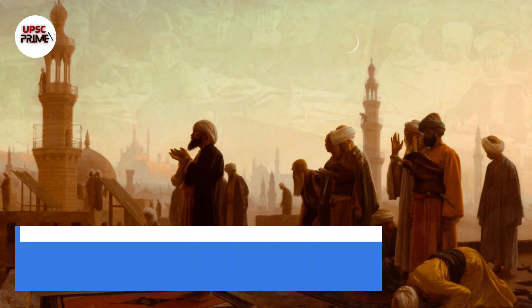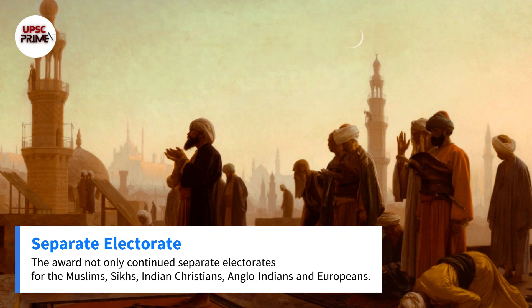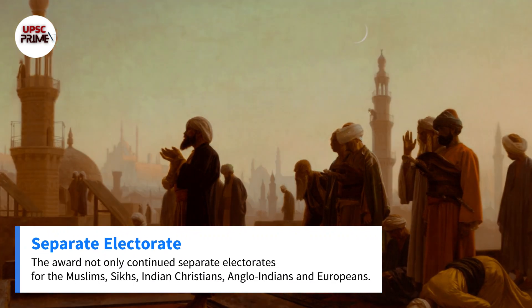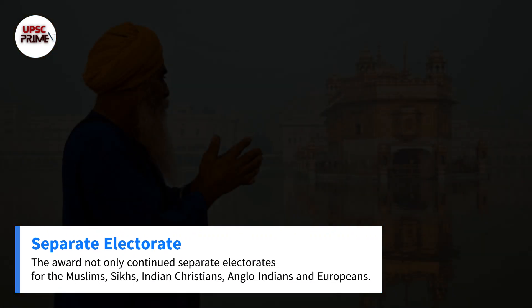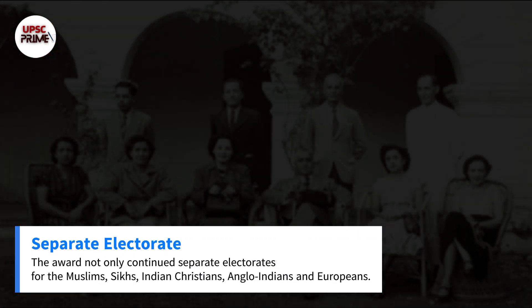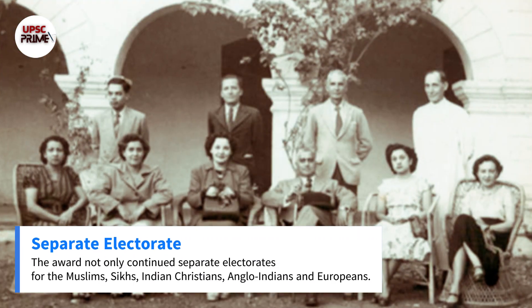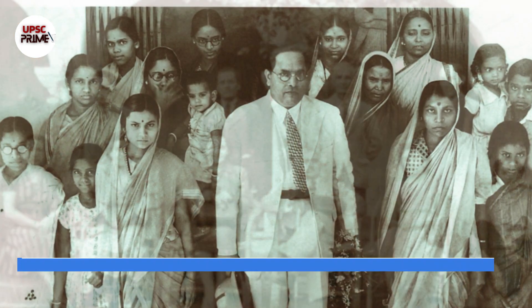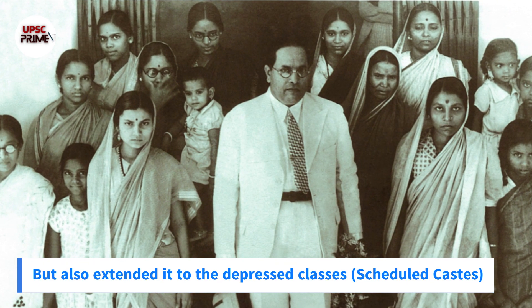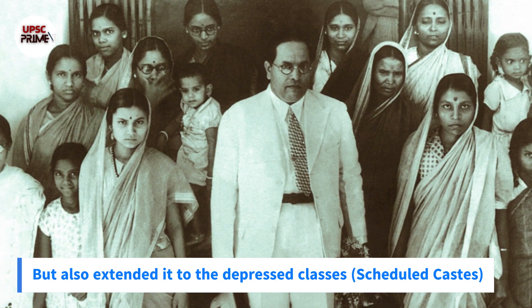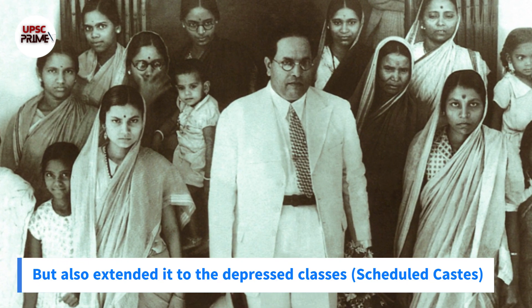The award not only continued separate electorates for the Muslims, Sikhs, Indian Christians, Anglo-Indians, and Europeans, but also extended it to the depressed classes, that is, the scheduled castes.